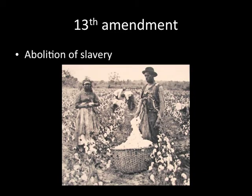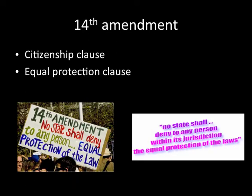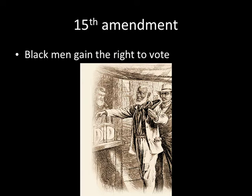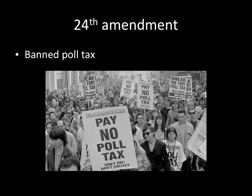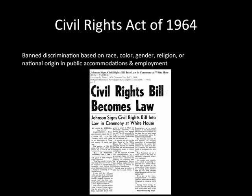Gonna kind of blast through these; we've done most of these earlier in the year. The 13th Amendment abolished slavery. The 14th Amendment had two clauses we care about: it granted citizenship to African Americans, and it said that everybody must be protected equally by the law. The 15th Amendment gave black men the right to vote. The 19th Amendment gave women the right to vote. The 24th Amendment banned the poll tax, which had previously been used to stop African Americans and minorities from voting.